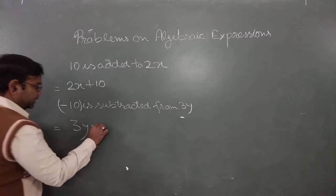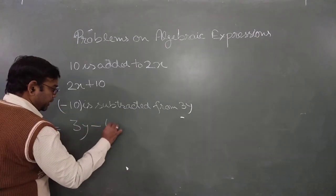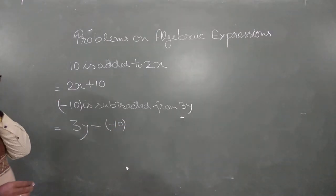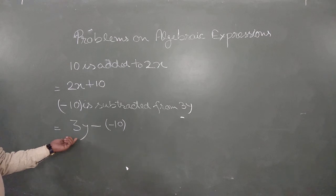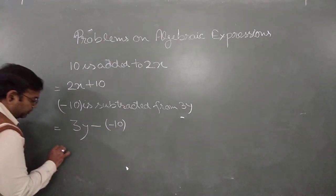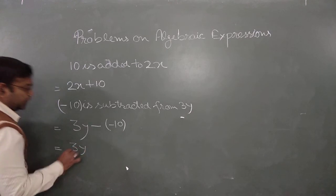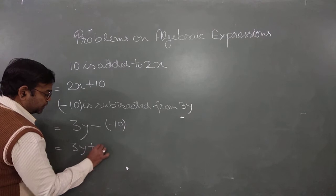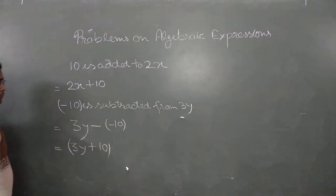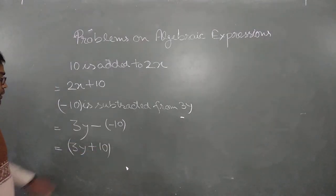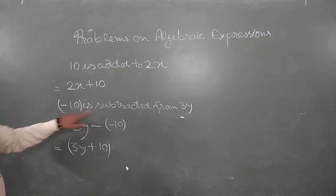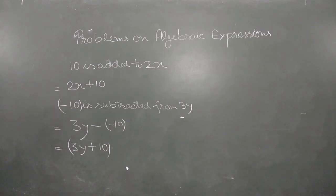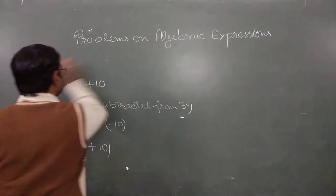When we remove the bracket from 3y minus (-10), the minus-minus becomes plus, so it's 3y plus 10. This is the result when minus 10 is subtracted from 3y. Hope this is clear.